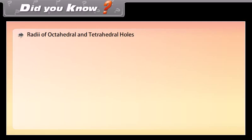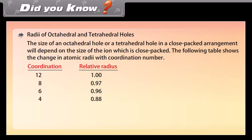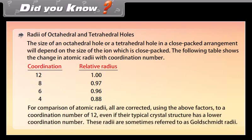Did you know — radii of octahedral and tetrahedral holes? The size of an octahedral or tetrahedral hole in a close-packed arrangement depends on the size of the ion which is close-packed. The following table shows the change in atomic radii with coordination number. For comparison, all radii are corrected to a coordination number of 12, even if their typical crystal structure has a lower coordination number. These radii are sometimes referred to as Goldschmidt radii.